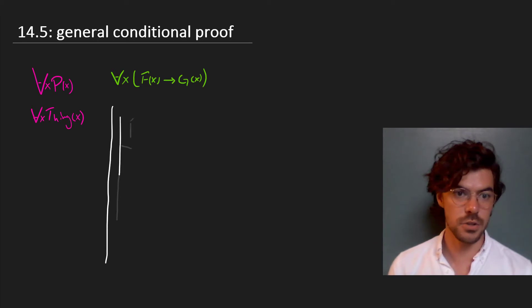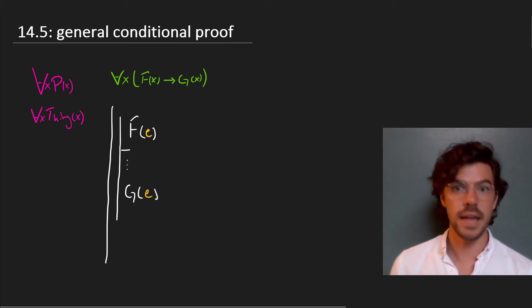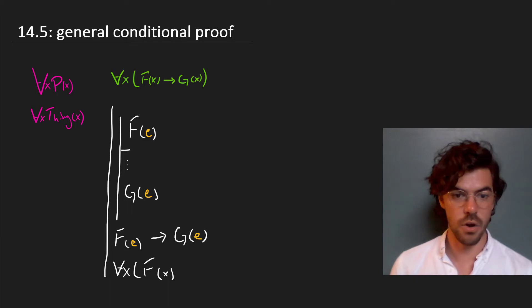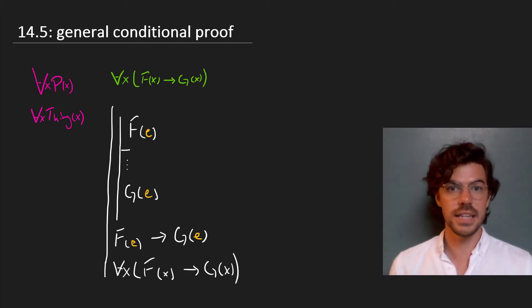We assume that e, e in these examples, has been just our arbitrary constant. We assume that e is an F. We derive, in the course of a conditional proof, that e is a G. That gets us the conditional statement, if e is an F, then e is a G. And then we can apply universal generalization to say that all F's are G's, since, again, this constant e here just is arbitrarily selected.